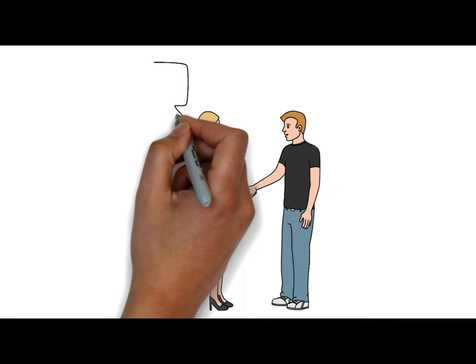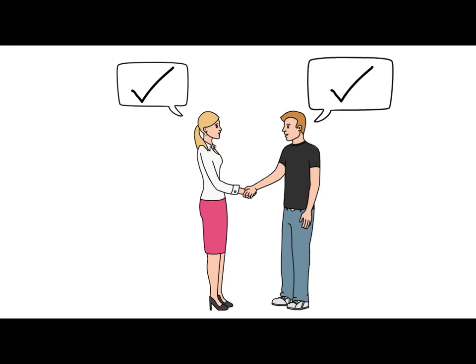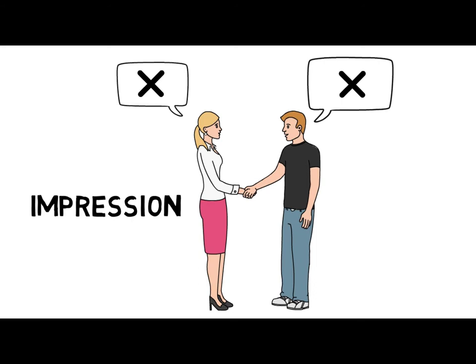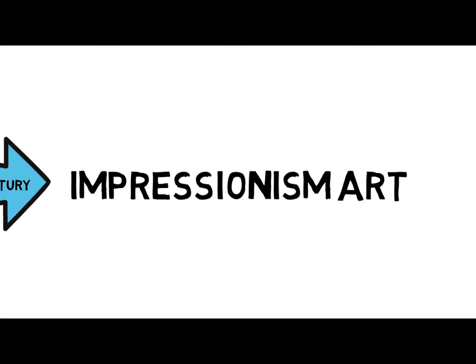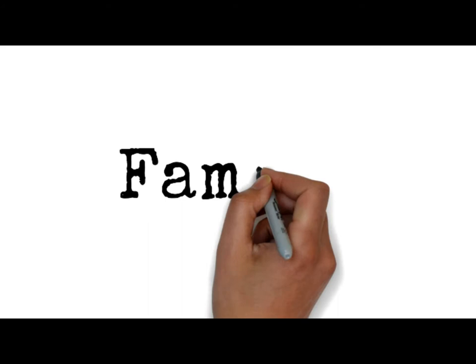Imagine you are in a situation where you are meeting a person. Is there a time when, even at first glance, you are already comfortable with them? And on the other hand, there are persons who, also at first glance, you don't like to be with because you know you will be uncomfortable. That's what we call an impression. And in art, this is a movement that started from 1860 to the late 19th century, which we call Impressionism Art — one of the most identifiable and famous art movements in history, often referred to as the first modern movement.